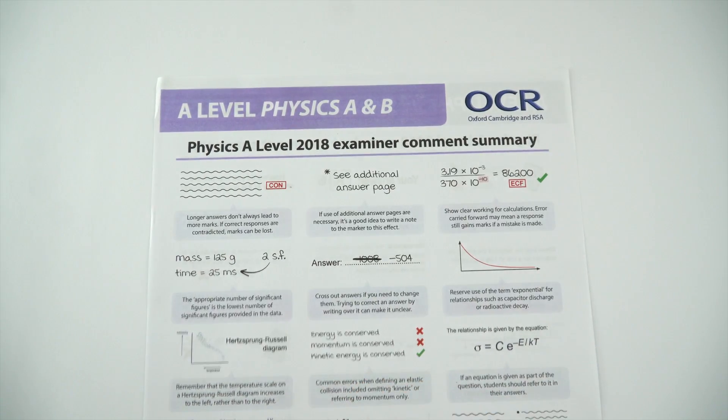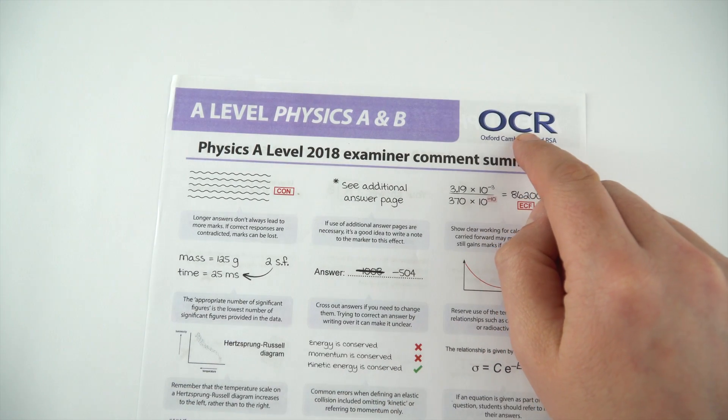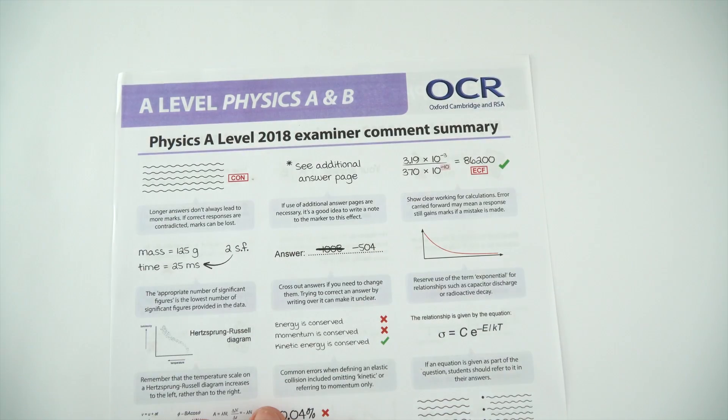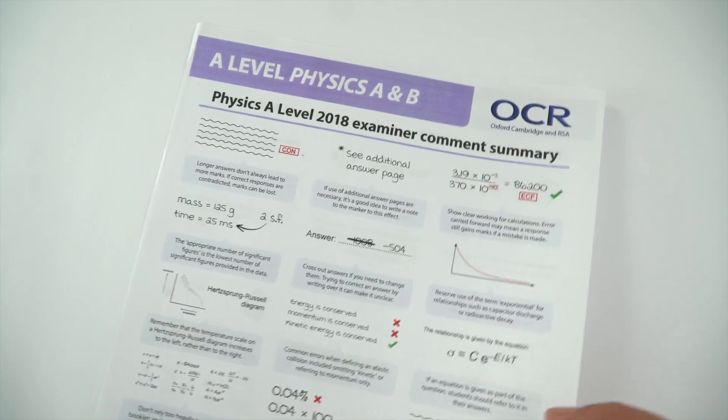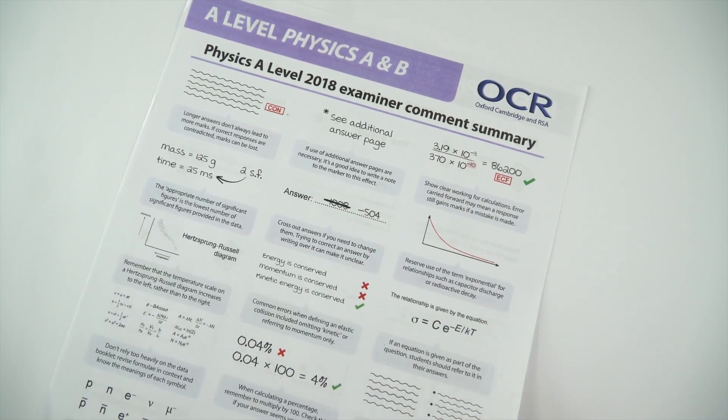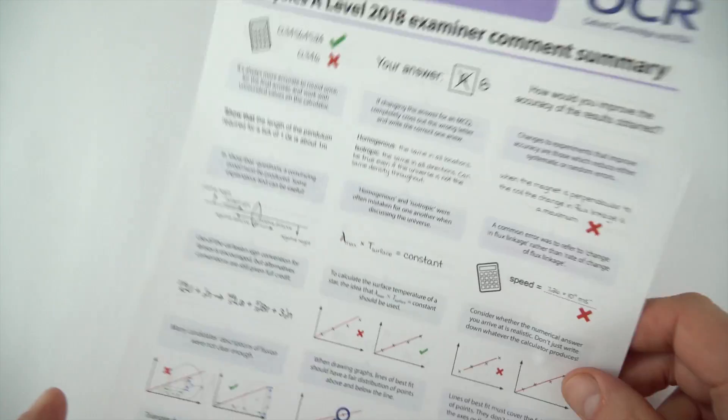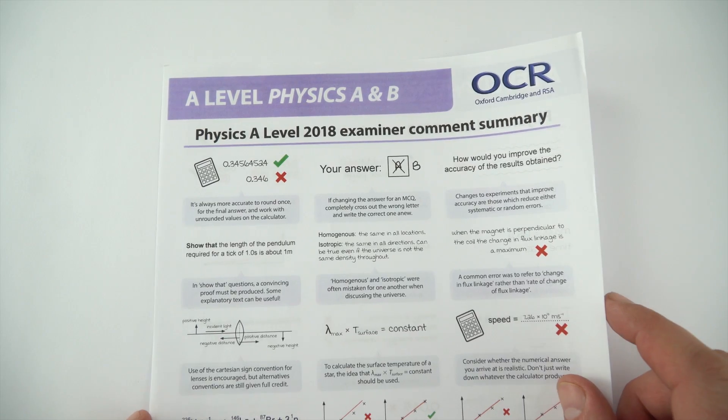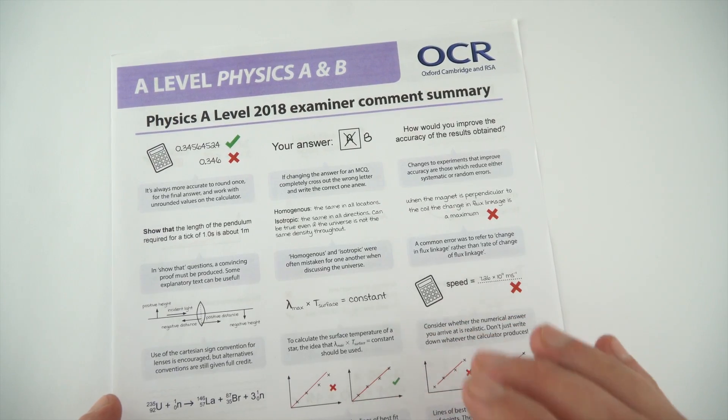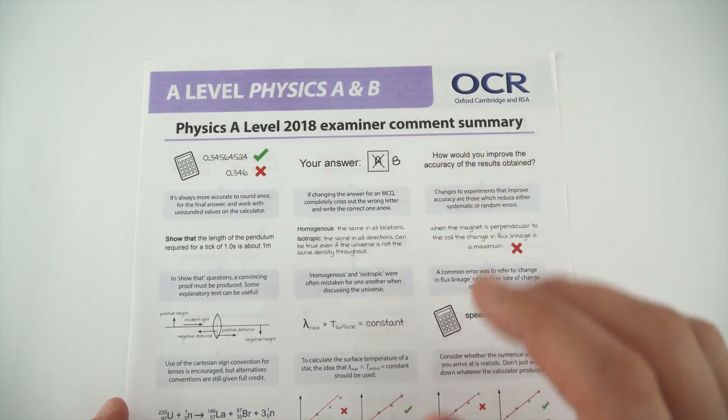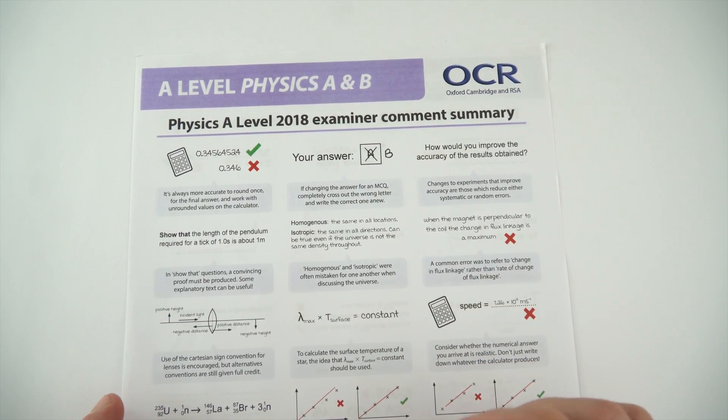Now, I did meet with some of the people at OCR, which is one of the big exam boards, and they gave me this amazing document. I haven't found a link to it on their website, but if you've got one, please post it in the comments below. This is basically a summary of the 2018 exams based on everybody doing the physics exams for OCR and the kind of main mistakes that people made.